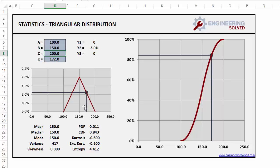And then you have your PDF and CDF, your kurtosis, which for triangular distributions is always negative 0.6. Your excess kurtosis is also the same. And then your entropy here.